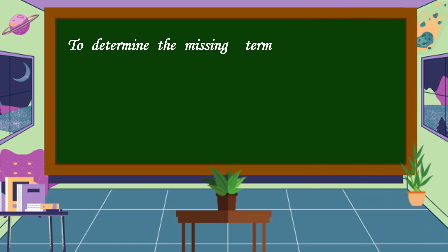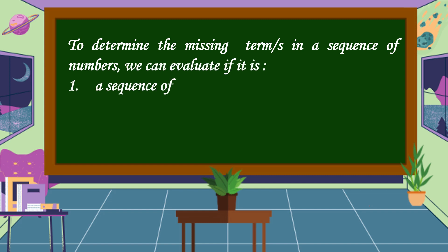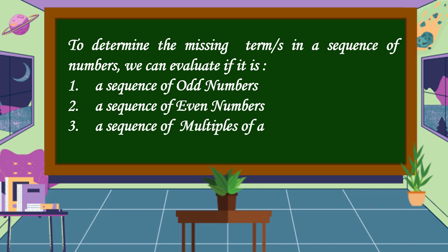To determine the missing term or terms in a sequence of numbers, we can evaluate if it is a sequence of odd numbers, a sequence of even numbers, a sequence of multiples of a number, or a sequence of factors of a number.